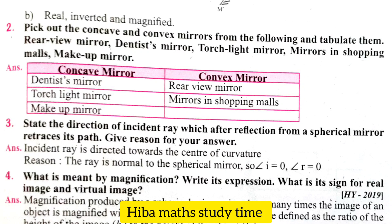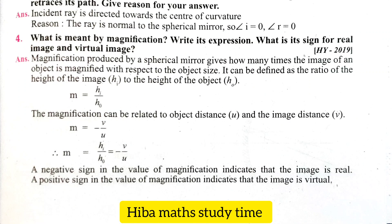Fourth question: what is meant by magnification? Write its expression. What is its sign for real and virtual images? Magnification produced by a spherical mirror gives how many times the image of the object is magnified with respect to the object's height. It is defined as the ratio of the height of the image (Hi) to the height of the object (H0). So M = Hi/H0. Magnification can also be related to object distance U and image distance V: M = −V/U. Therefore, M = Hi/H0 = −V/U. A negative value of magnification indicates a real image; a positive value indicates a virtual image.